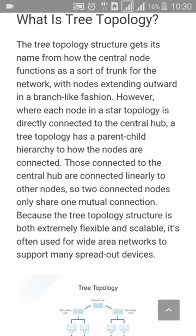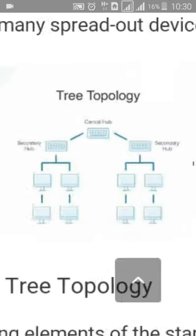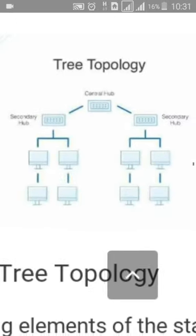Nodes connected to the central hub are connected linearly to other nodes, so two connected nodes share only one mutual connection. Because the tree topology structure is extremely flexible and scalable, it is often used for wide area networks to support many spread-out devices. In the diagram, you can see the central hub with two secondary hubs branching out on the left and right, with further computers attached to each.